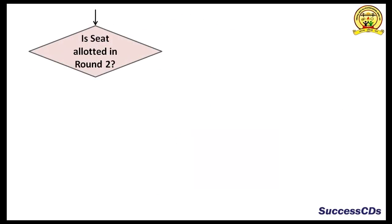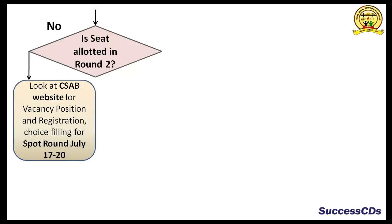If your seat is not allotted in Round 1, wait for the second round seat allocation on July 13th. Is your seat allotted in the second round? If in the second round your seat was not allotted, please visit the CSAB website for vacancy position, registration, choice filling, fee payment, and locking of choices for spot round and extra spot round between 17th to 20th of July.